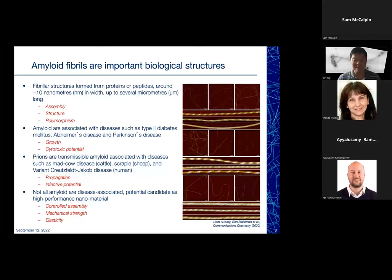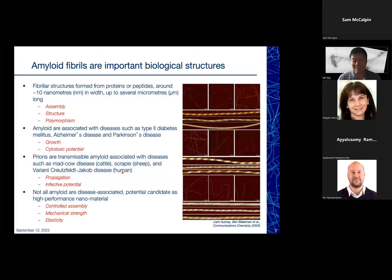There is also a subgroup of amyloid called prions. Just like amyloid, they are fibrillar structures, but they can spread between cells, between individuals, and even sometimes between species. For example, we heard about mad cow disease in the 1980s in the UK. More importantly, amyloid structures are not all disease-associated — some are involved in important biological processes. So they are really associated with both disease and biological function.